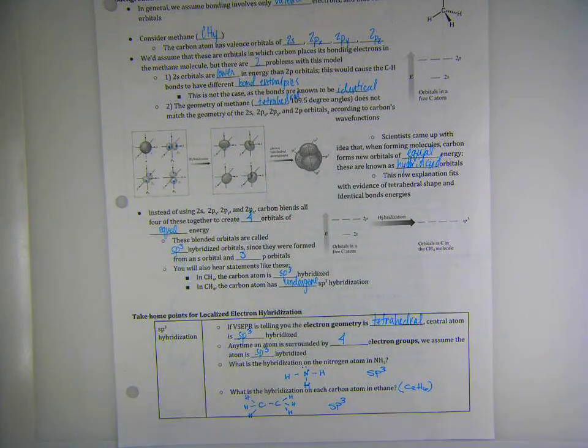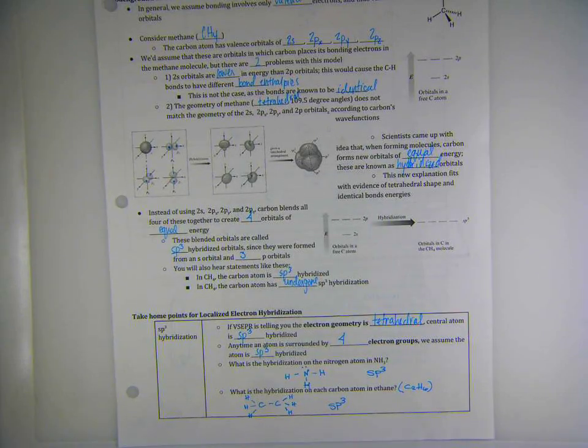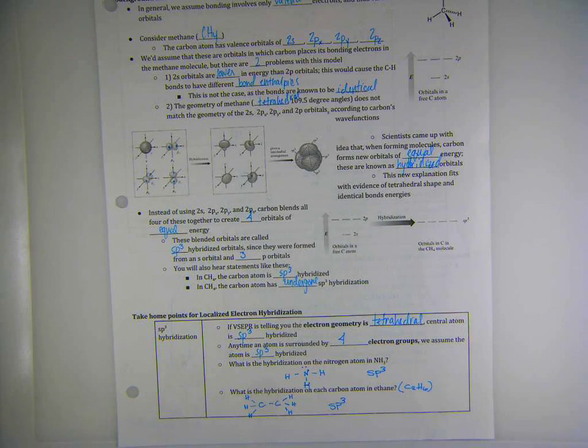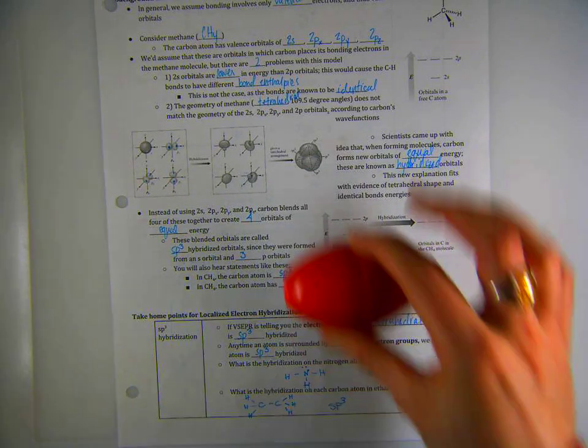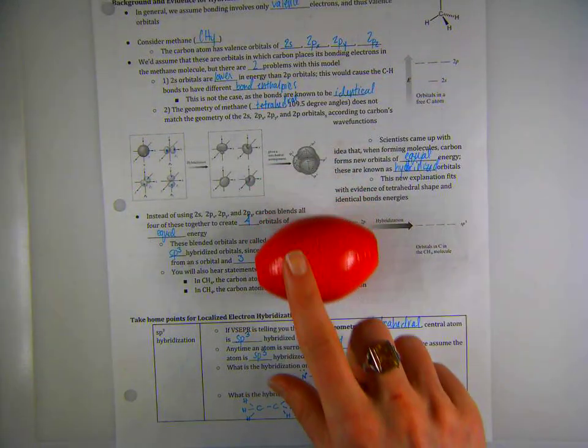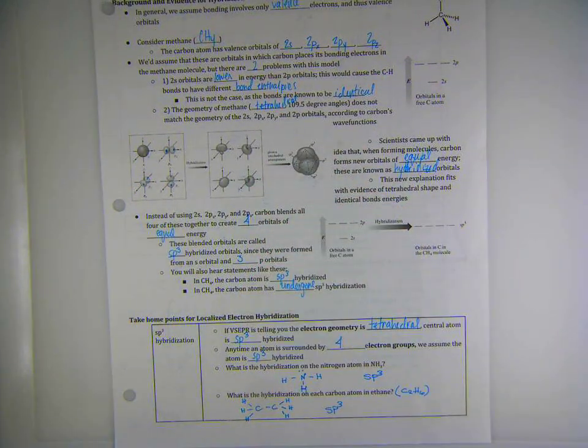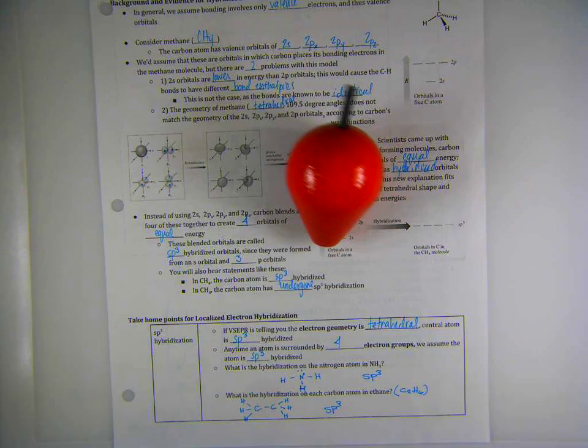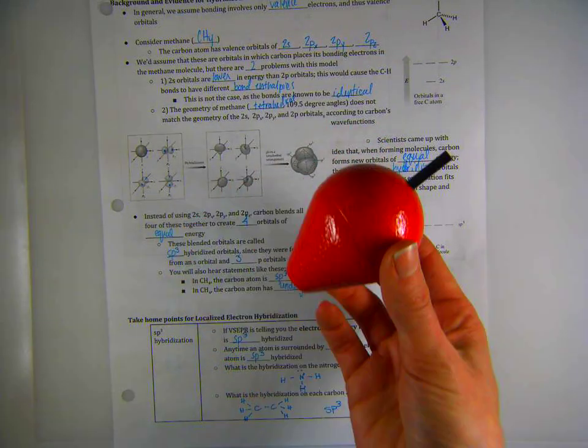Now, we already talked about how when bonds form in a molecule, the orbitals overlap to create what's called hybridized orbitals. I will be using this to represent a red-shaped object like this to represent a hybridized orbital.